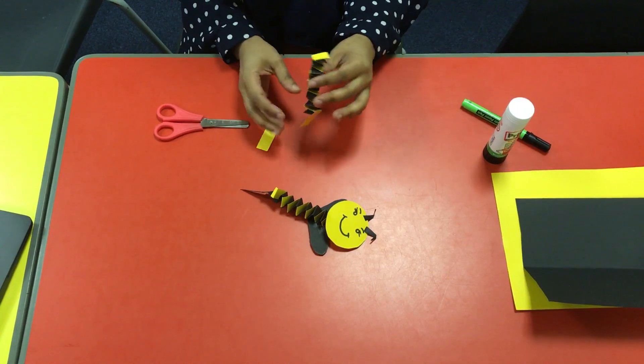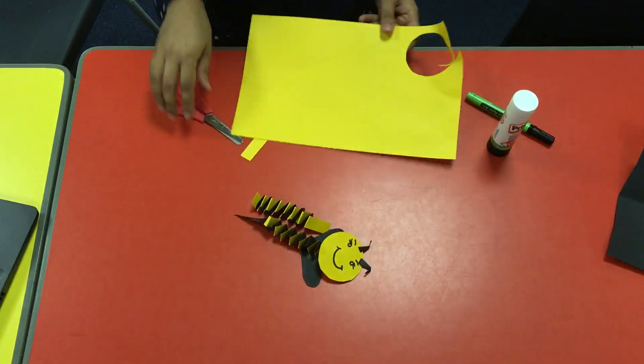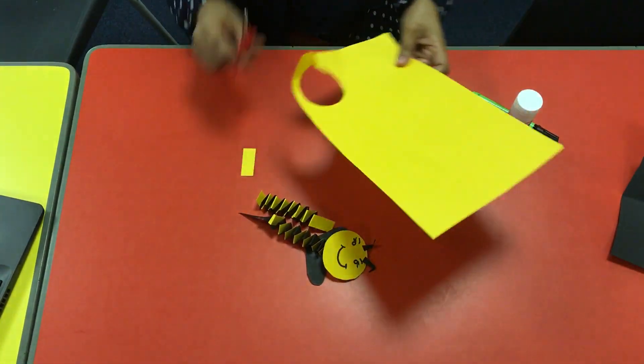So once you've done that, we're going to add the face for the bee. To do that, we're just going to get some card and cut out a circle.